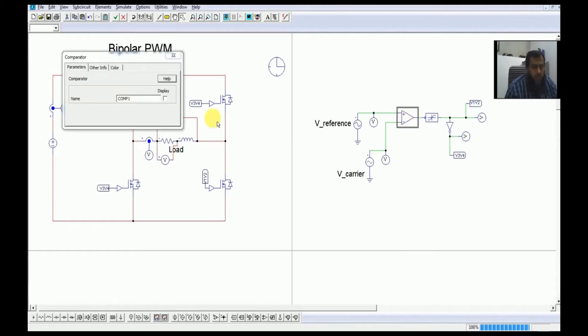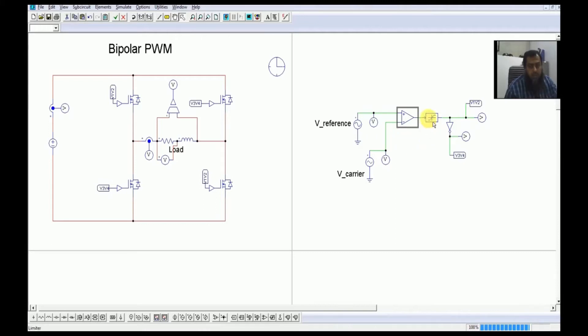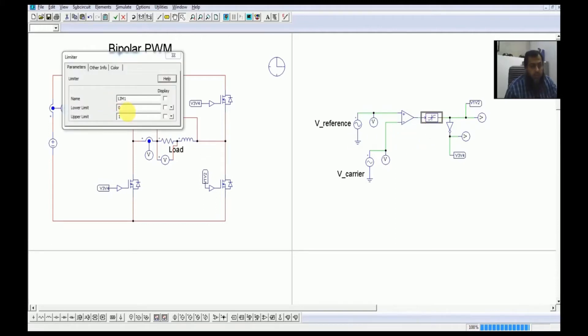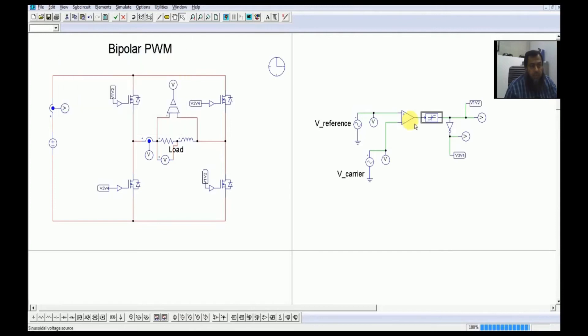After this we placed a comparator block here. Because this comparator block gives us a value which are greater than or less than 1, we have placed a limiter here to limit them from 0 to 1 in order to avoid the dead short circuit.